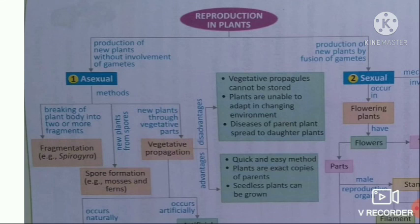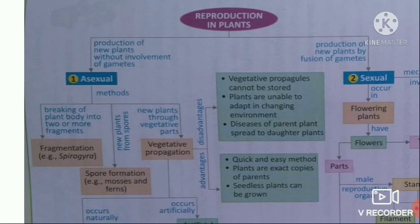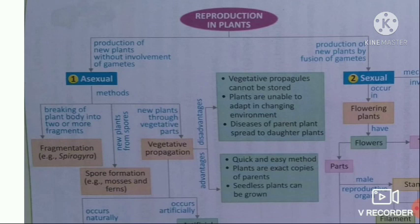The biggest advantage of vegetative propagation is that it is a quick and easy method — new plants can be obtained quickly. It can also be used for plants that are seedless or have low seed viability. Some disadvantages: vegetative propagules cannot be stored as easily as seeds. Plants are unable to adapt to a changing environment because there are no variations and no favorable adaptations. Also, diseases of the parent plant are definitely transferred to the new plants, because there are no mutations or changes available.